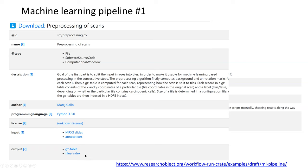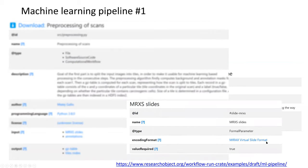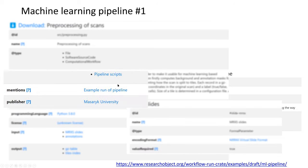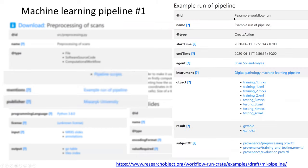Clicking into pre-processing, we see there's a Python script. We can see which version of Python to use, and it should have a license — in this case it doesn't because it's in-house software with restricted access due to the cancer data. You can describe the different tools and use the different attributes to expand on them, including listing types of inputs and outputs. Here we find that a MIRAX file is a virtual slide format — clicking the link gives a definition for this open format.